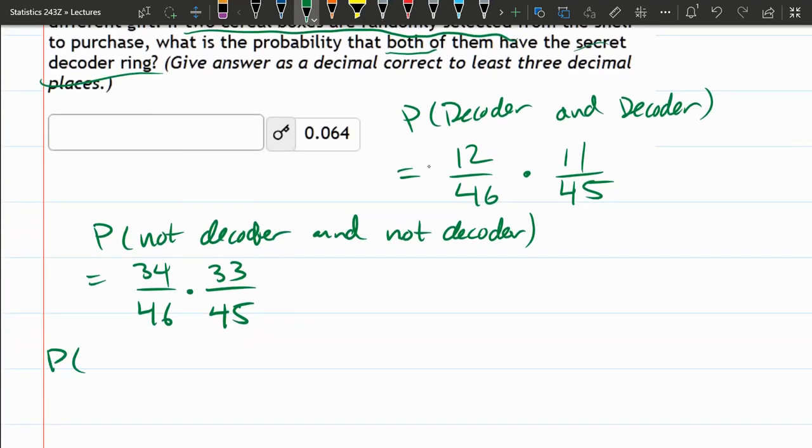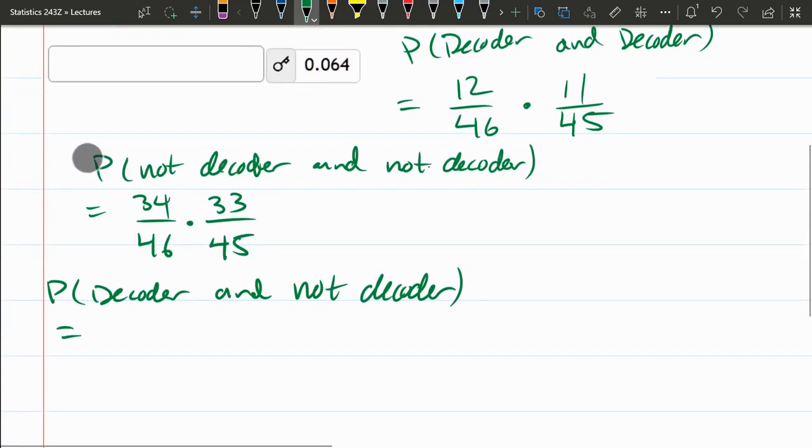So now we'll do something slightly different. Decoder and then a not decoder. So this will help out on some of the questions you're going to see soon. So probability of a decoder is 12 out of 46. Now, not decoder. There's now 45 boxes for sure. Now, not decoder. How many boxes do not have a decoder?